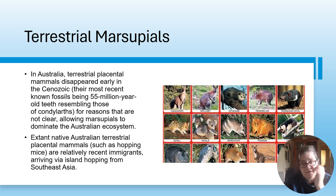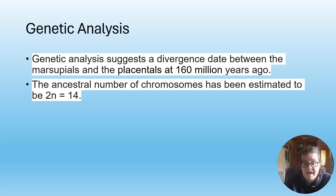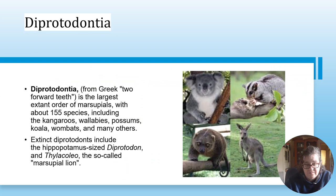In Australia, terrestrial placental mammals disappeared early in the Cenozoic. The most recent known fossils are 55 million year old teeth, allowing marsupials to dominate the Australian ecosystem. Extant native Australian terrestrial placentals, such as hopping mice, are relatively recent immigrants. Genetic analysis suggests a divergence, as already covered, of about 106 million years.